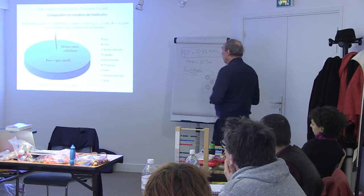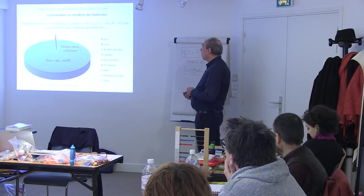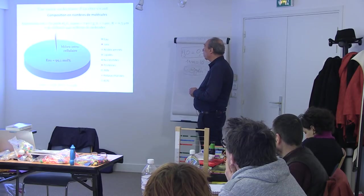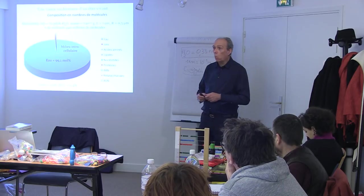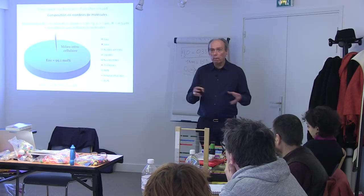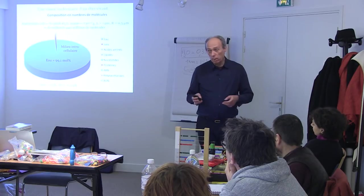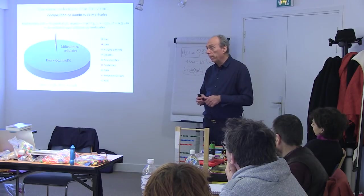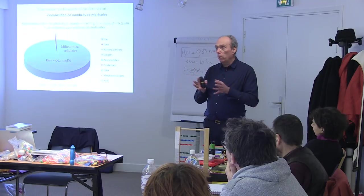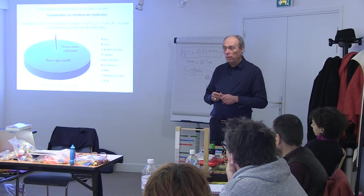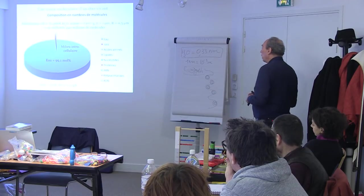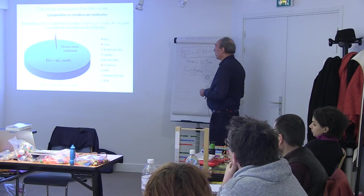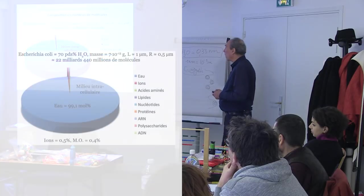Ce que j'ai fait, c'est transformer la composition d'une cellule vivante. On a pris une bactérie, parce qu'il faut savoir qu'à l'échelle de la cellule, il n'y a pas trop de différence entre une bactérie, un être humain, un champignon, un ver de terre — tout ça c'est pareil. Il y a une cellule qui est relativement bien définie, avec des petits détails différents, mais grosso modo si on s'intéresse juste aux petits objets, c'est à peu près la même chose.